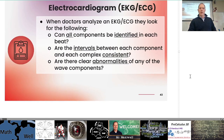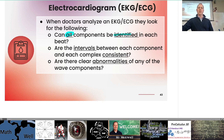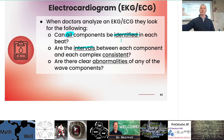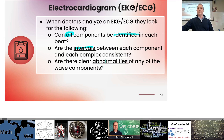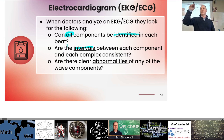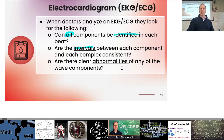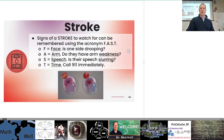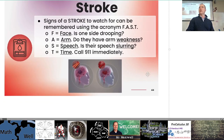When doctors analyze an EKG or ECG, they look for the following: Can all components be identified in each beat? Are the intervals between each component and each complex consistent — meaning is it a regular heartbeat or is there a big space between beats? Are there any clear abnormalities of any of the wave components? This is just a brief introduction — the P wave, QRS complex, and T wave are the three main parts medical professionals look for.